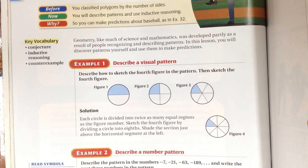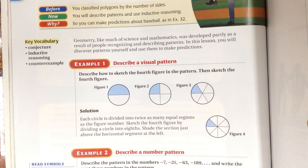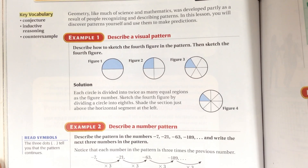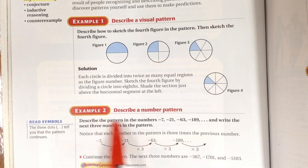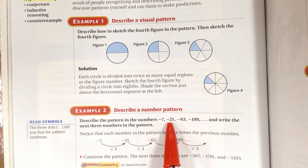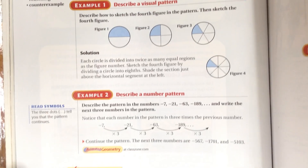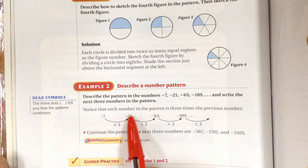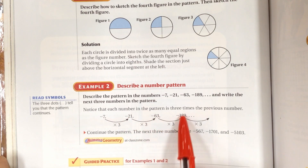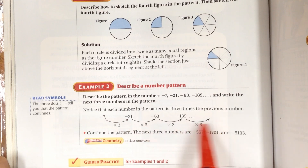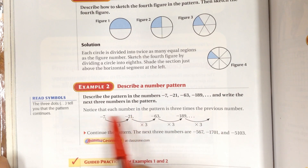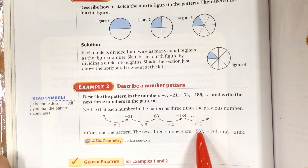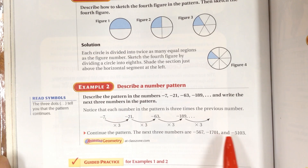Basically you want to look for the pattern and figure out what the next picture or next number is. For example 2, describe a number pattern. You have negative 7, negative 21, negative 63, negative 189 — write the next three numbers. When you have numbers, you want to find out if you multiply or add to get to the next number. In this case you multiply by 3 each time. So the next three numbers are found by multiplying by 3 each step.